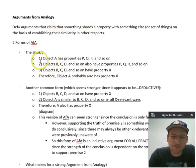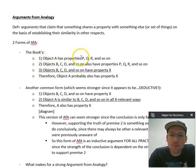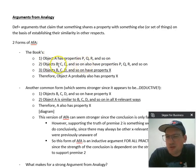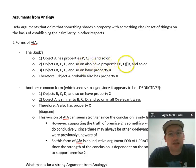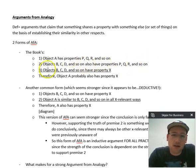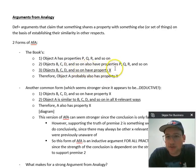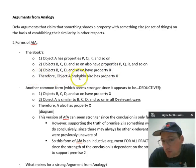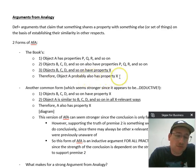Here's the version the book gives. Object A has properties P, Q, R, and so on. Objects B, C, D — it could be just one thing or many things — also have properties P, Q, R. Objects B, C, D have property X, which is going to be the disputed property. Therefore, object A probably — because this is inductive reasoning and it's fallible — also has property X.